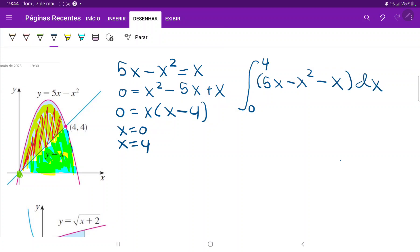I'm just going to simplify it a little bit and then apply the reverse power rule. So this is the integral from 0 to 4 of negative x squared plus 4x, dx.